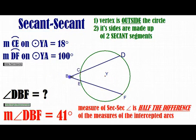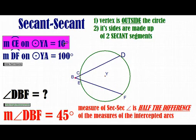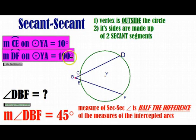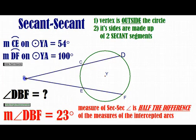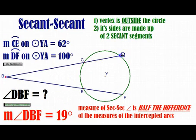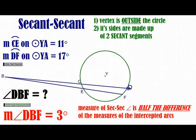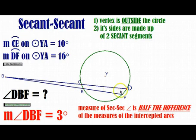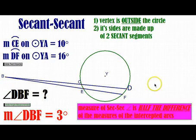Let's verify with another configuration. With arcs of 10 and 16: the difference is 6, and half of 6 is 3. That's the measure of the angle way out there. That is exactly how you do it every single time — take half the difference of the two arcs.